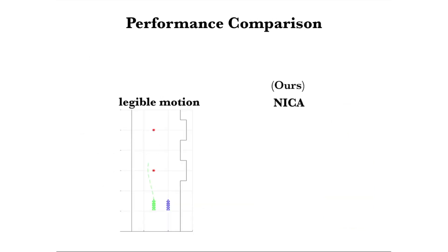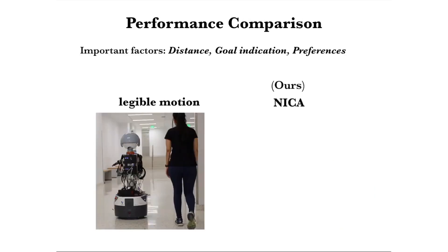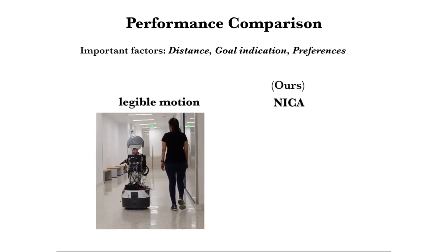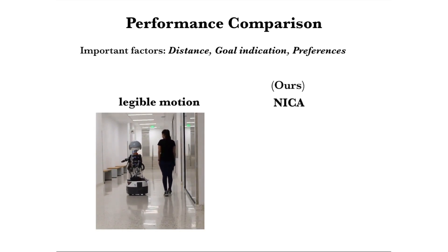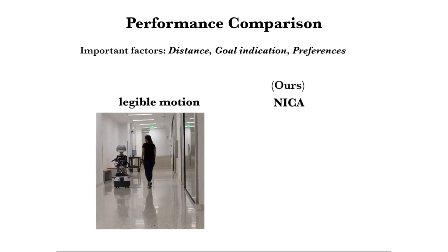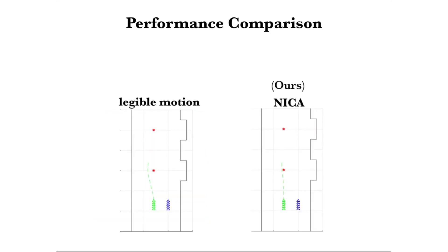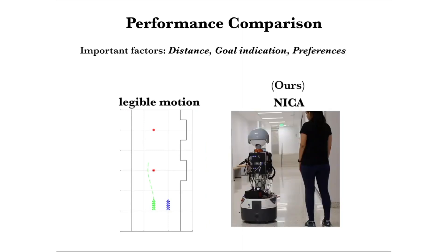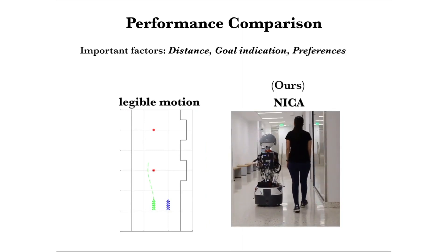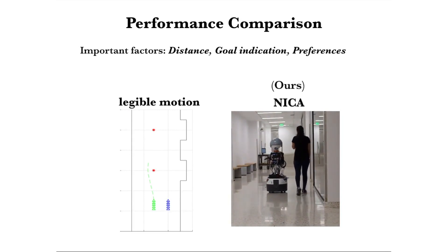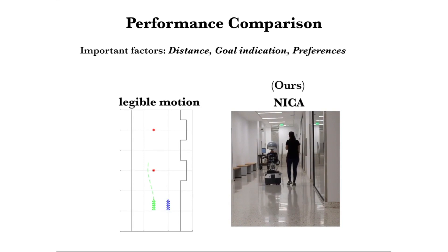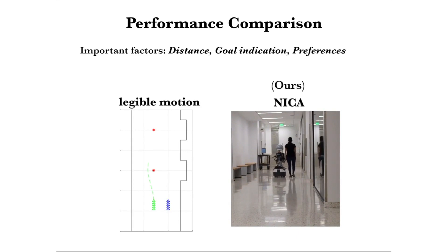Let's see the performance of the two approaches. For legible motion, the robot turns early, resulting in a larger curve. Due to the larger tracking error, legible motion arrives at the destination one second later than NICA. As for NICA, when close to the first door, it slightly turns away. NICA automatically tunes the motion to be efficient and still reveals information through salient motion. Whereas for legible motion, one has to manually tune some parameters to regulate the trajectory from being overly exaggerated.